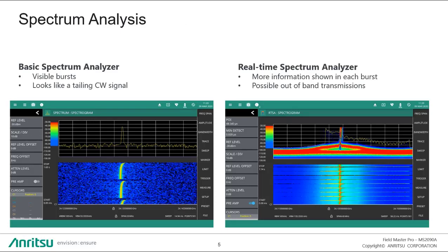On a higher level, you can start with looking at the signal in a spectrum analyzer. If you look at it on the left, you can see some bursts. This is a CW signal that's kind of tailing up in frequency over time. That gives you a little bit of an idea of what's happening, but you don't see a lot of the ins and outs of the signal.